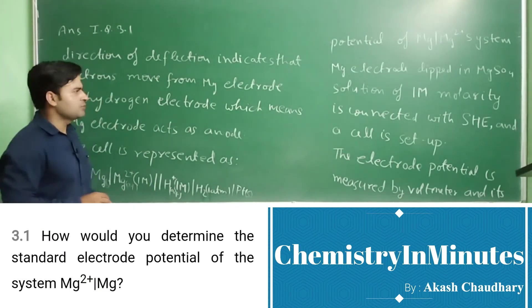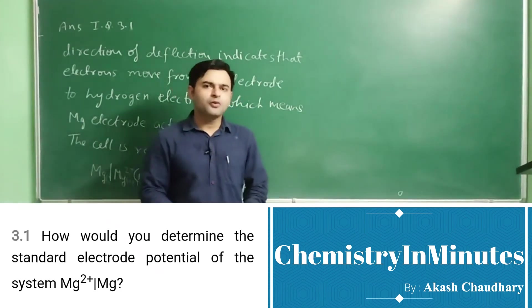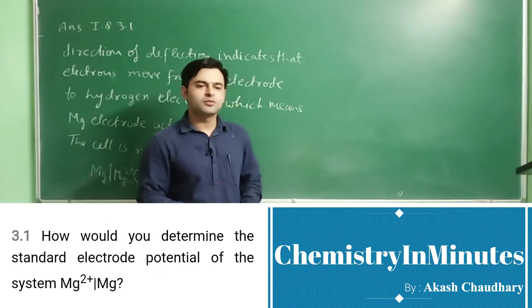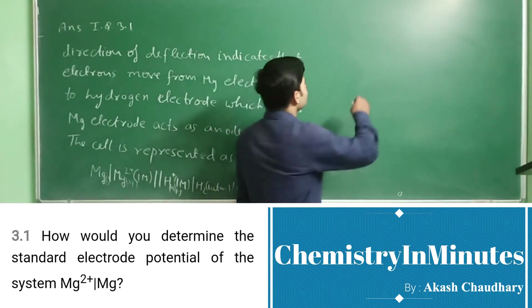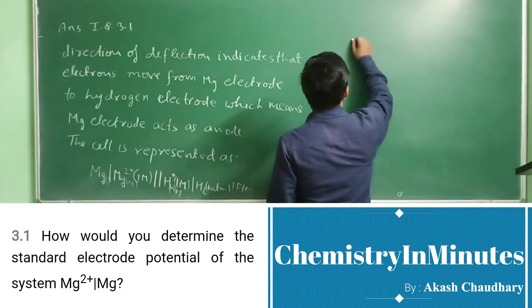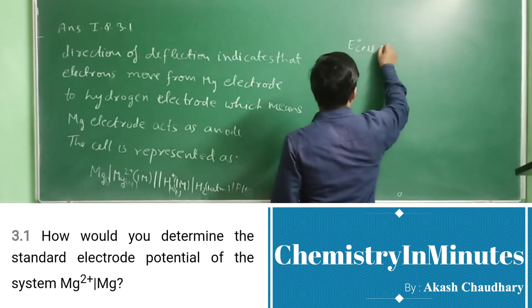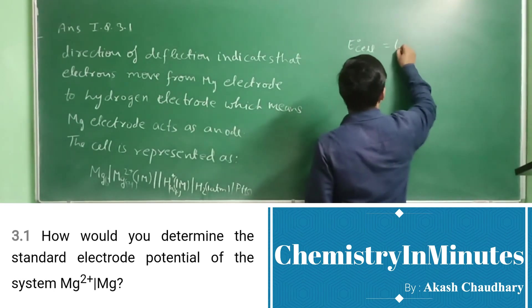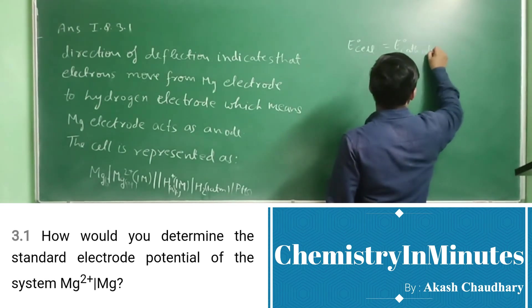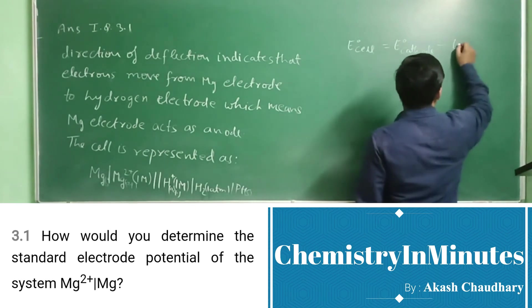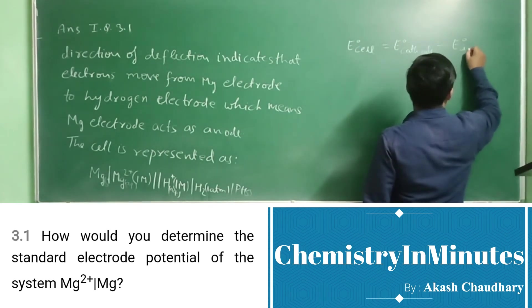Now, how will we determine the cell potential, the standard electrode potential? We will be using the Nernst equation, which is E°cell = E°cathode - E°anode.